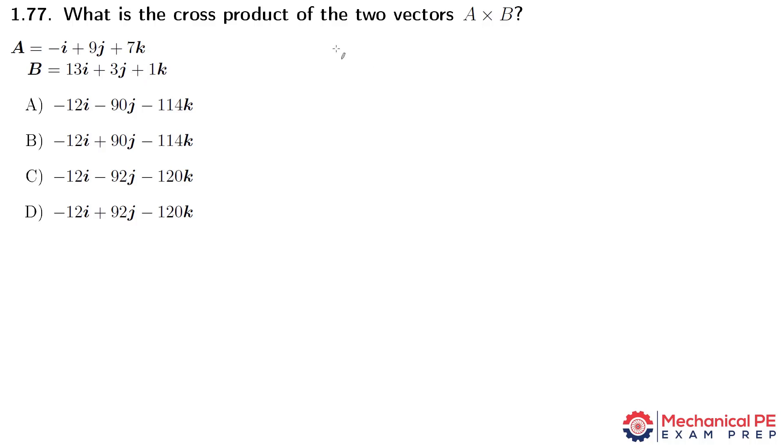And the way that we calculate that is we set up a matrix where the first row is literally i, j, k, the unit vectors that determine the direction. And then underneath that, the next row, the second row, is vector A, and it's just the coefficients. So minus 1, 9, and 7, and then the third row is vector B: 13, 3, and 1.